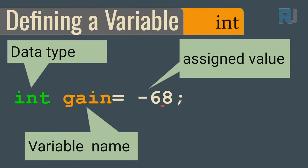There is another data type called double, which is the same as float in Arduino. When we want to store text, we use string. This can be just one word or multiple words. We type string with a lowercase s, then the variable name, then assign the value. Pay attention — for string we use double quotes at the beginning and double quotes at the end.